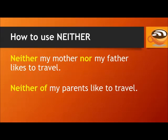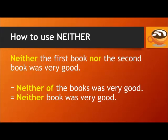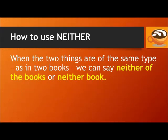Here are some more examples. Neither my mother nor my father likes to travel. Neither of my parents like to travel. We use neither and nor when naming both items specifically, and neither of when talking about my parents together as a group. Neither the first book nor the second book was very good. Neither of the books was very good. Or, neither book was very good. When the two things are of the same type, as in two books, we can say neither of the books, or neither book.